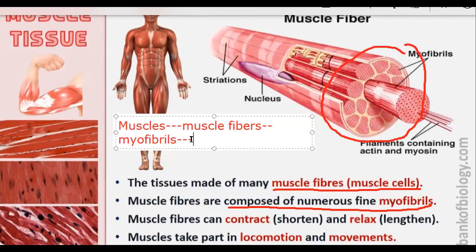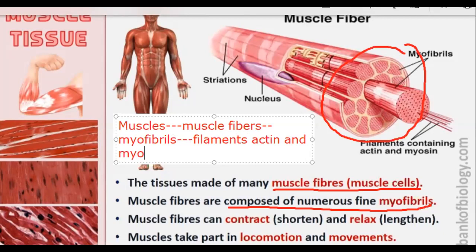These myofibrils are further composed of filaments, and these filaments are of actin and myosin. Actin and myosin are the structures which help the muscle to contract and relax. Contract means to lower or shorten in length, and relax means to lengthen.